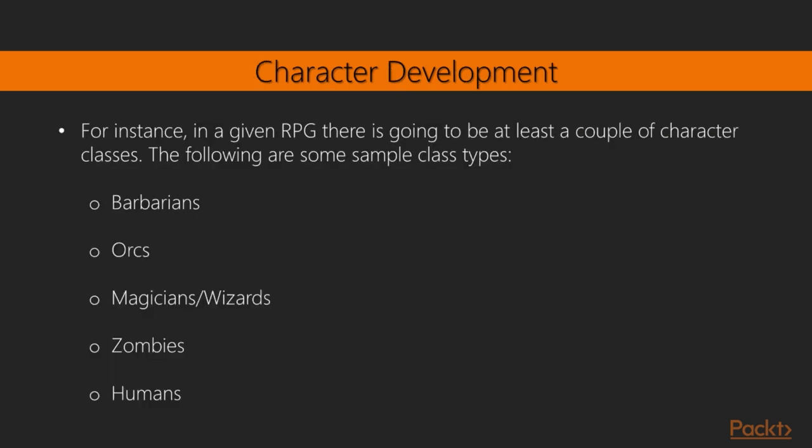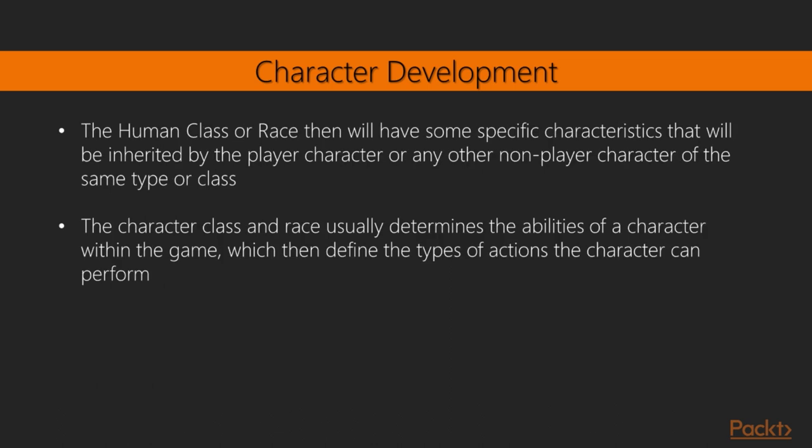Character development: As with any other part of RPG development, character attributes and actions are highly defined by the storyline of the game. These actions are performed indirectly when the player commands the character to perform a specific task. In a given RPG there is going to be at least a couple of character classes — for example: Barbarians, Orcs, Magicians or Wizards, Zombies, and Humans. Each character class might even have subclasses with its own uniquely defined attributes.